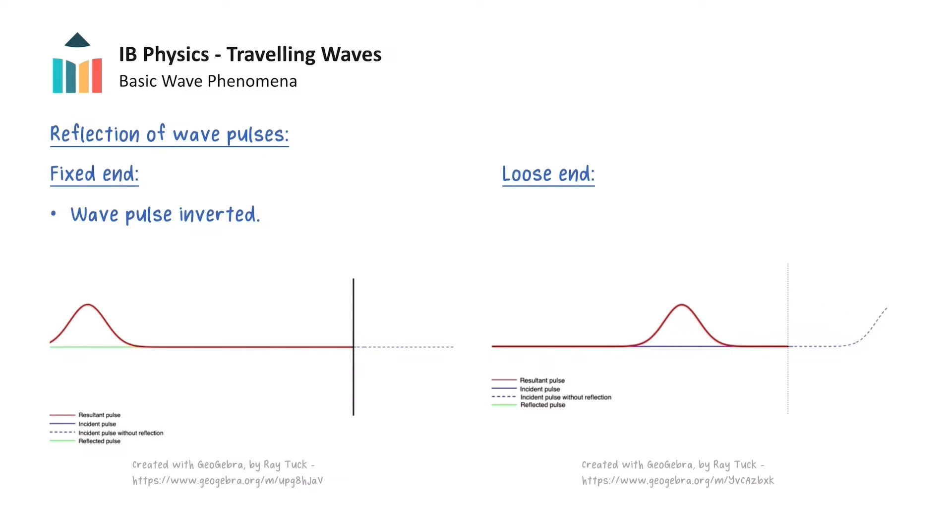Eventually, the loose end of the rope returns to its starting position, which creates a reflected pulse with an upward displacement moving to the left, but this time it is not inverted as there is no phase change.